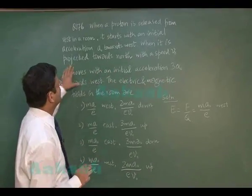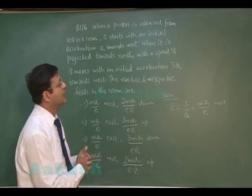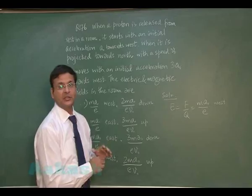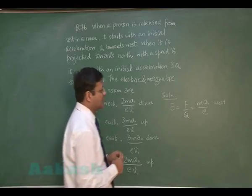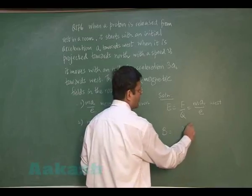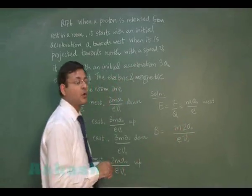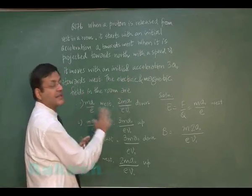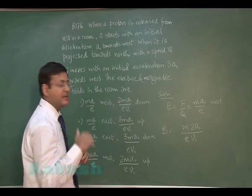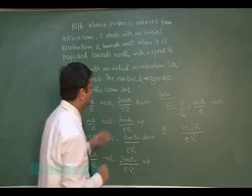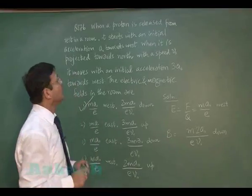When the proton is projected towards north with some speed, the magnetic force also acts, giving a total acceleration of 3a₀. The extra 2a₀ is due to the magnetic force: m(2a₀) = qvB. Since the force is towards west and velocity is towards north, by the right-hand rule the magnetic field must be pointing downward (into the ground). The most appropriate answer is the first option for question 176.